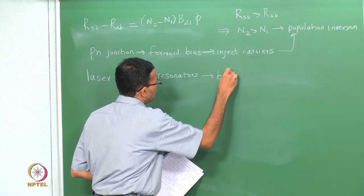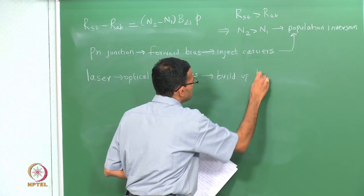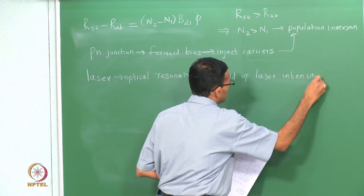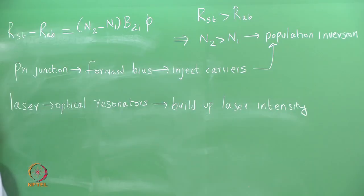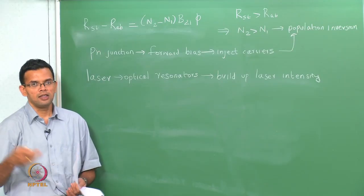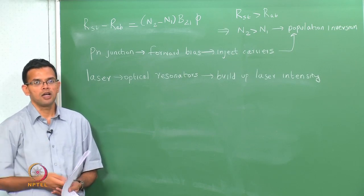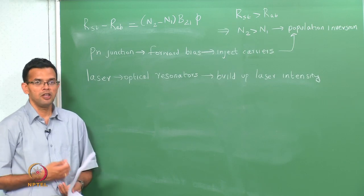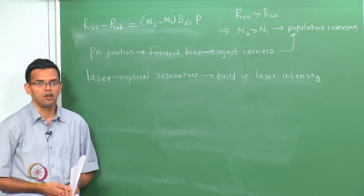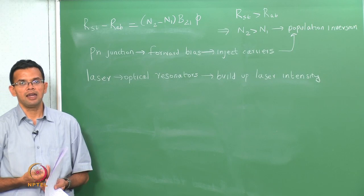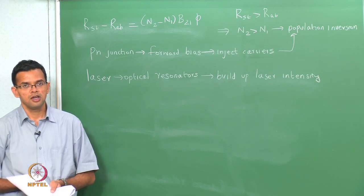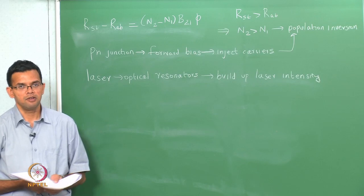Usually two resonators are used, one on either side. One of these is totally reflecting and the other one is partially reflecting, so that the laser output comes from one side. The materials used for lasers are very similar to those for LEDs: they have to be direct band gap materials, usually some sort of graded heterostructure is used, and depending upon the band gap the wavelength of the laser output will be determined.